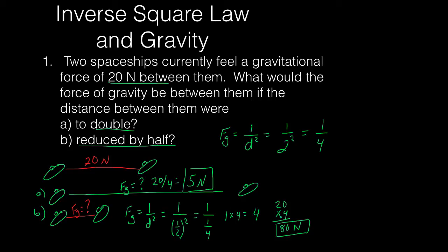We can see that the force of gravity increased significantly — four times as much — when they closed half the distance between them. Any time they move farther away, the force of gravity goes lower; whenever they move closer together, the force of gravity goes up. They follow this inverse square law.